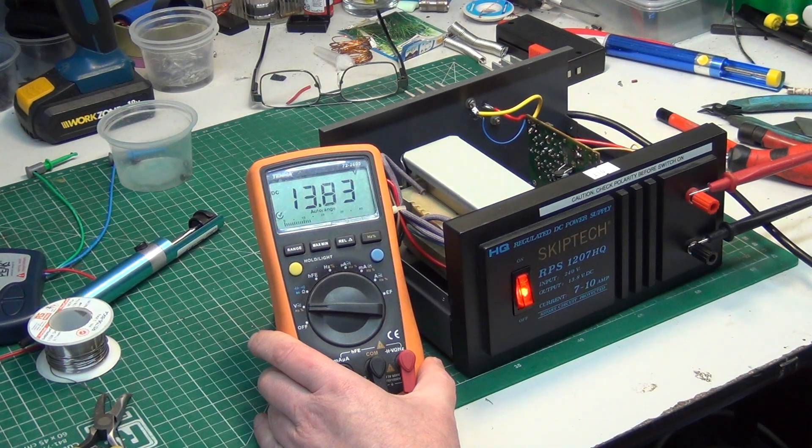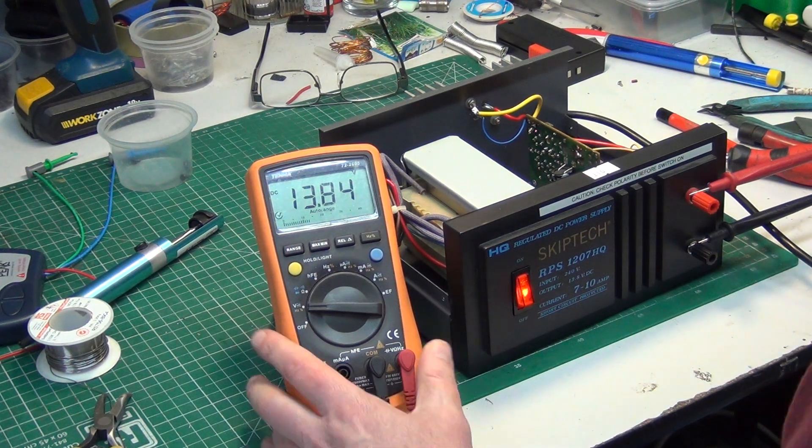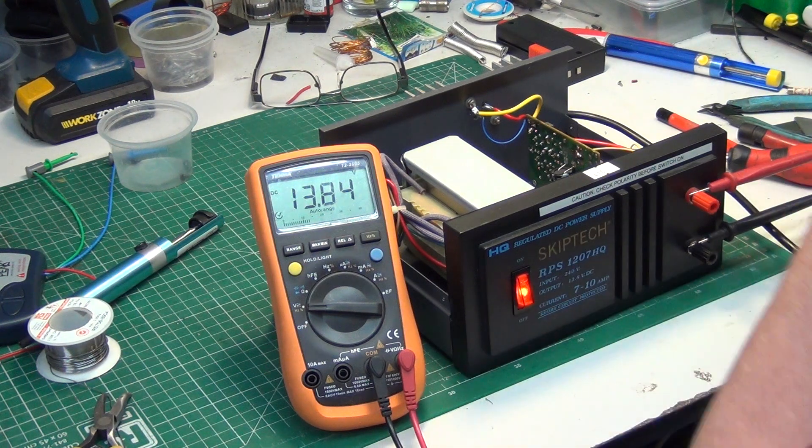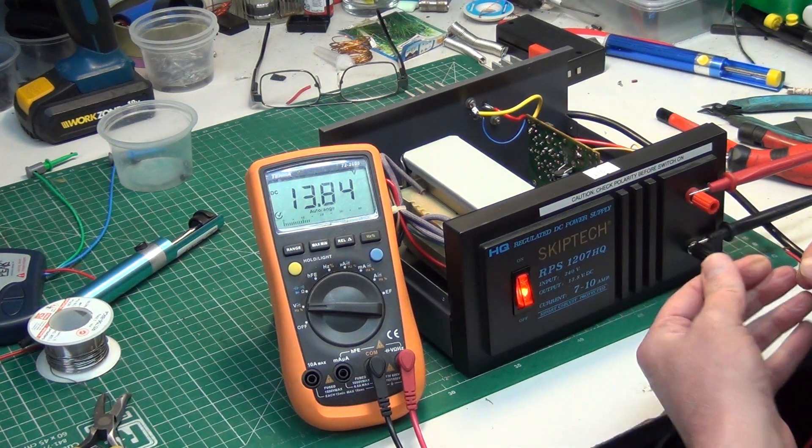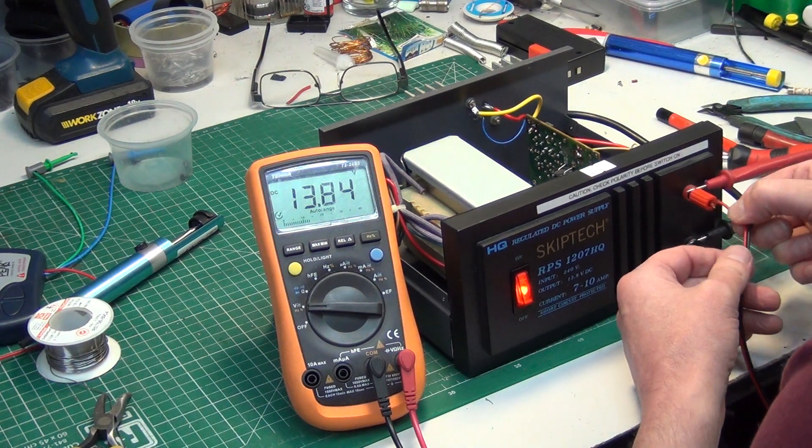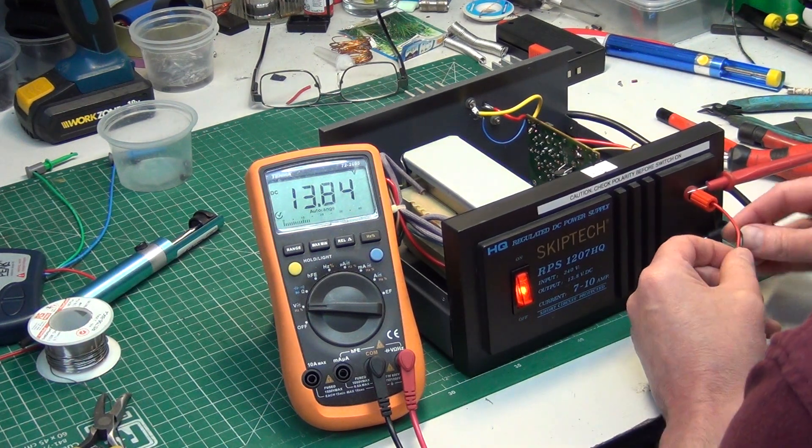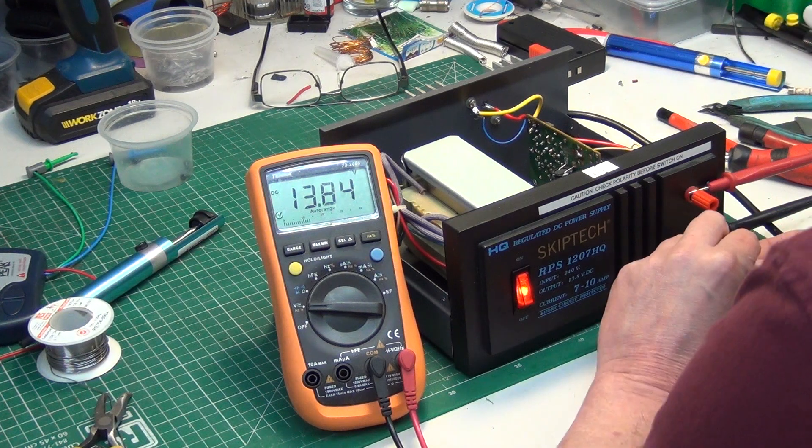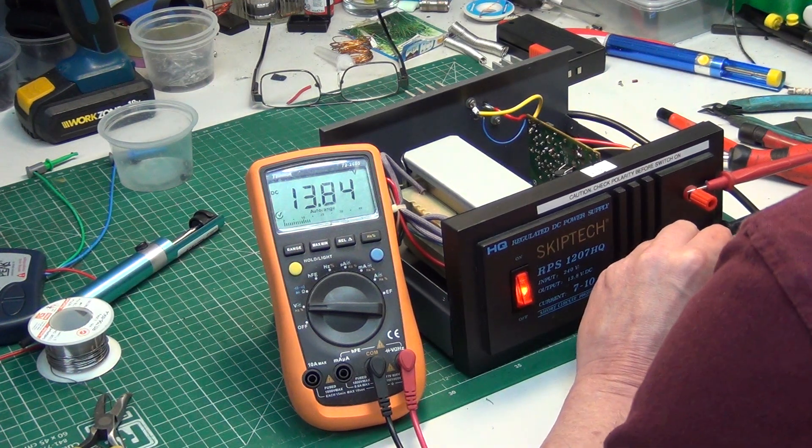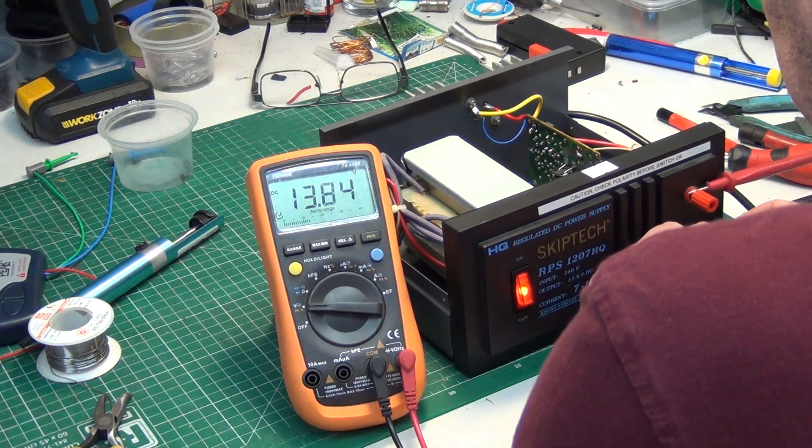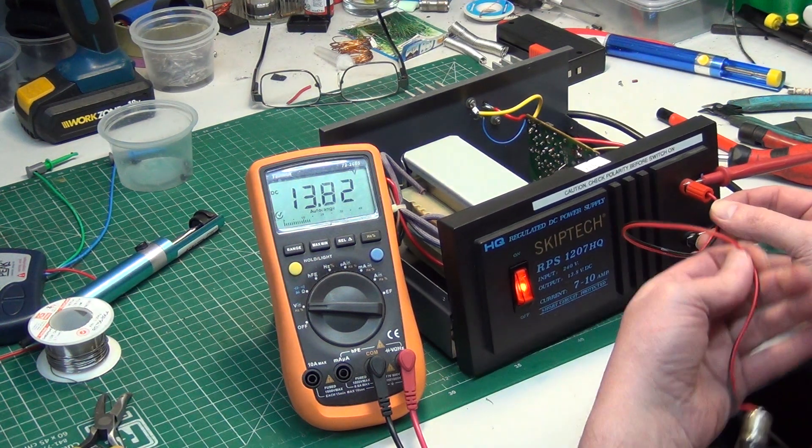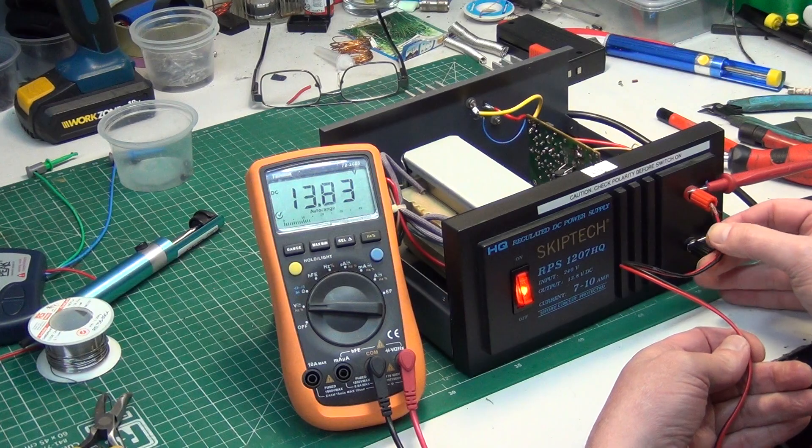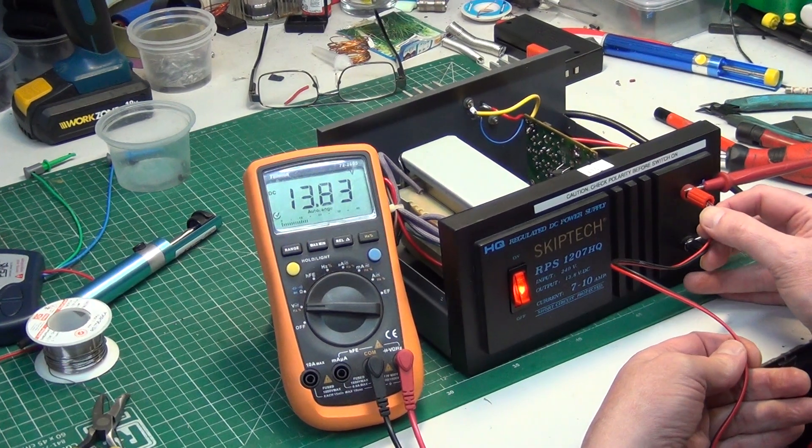So have we got a small bit of a load somewhere? We've got some bulbs kicking around haven't we? Five watt car bulbs. That's half an amp. And then we'll move over to the proper load which lives in a kitchen cabinet. There we go. And it's still 13.83. Right. I'll go and get the proper load.